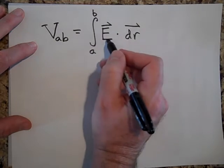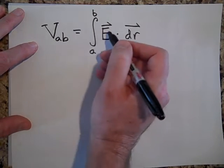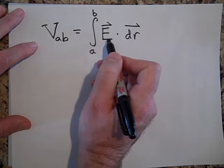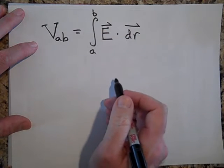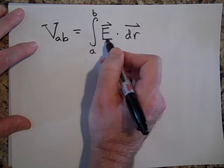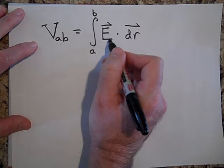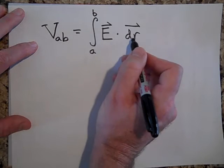Now this isn't the E at A, and it's not the E at B. It's the E at every point between A and B. So this E, this electric field is the E at every point between A and B. That's why we need a path integral.